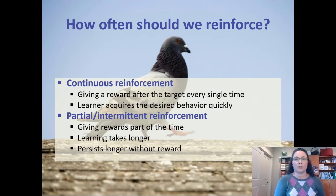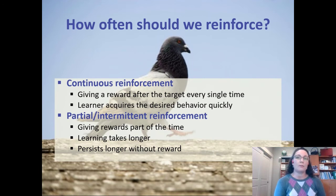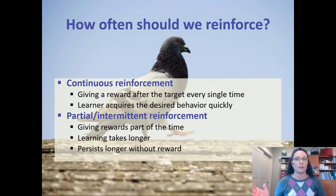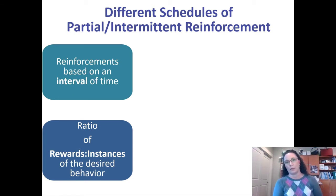Partial reinforcement — also called intermittent reinforcement — means sometimes you reinforce and sometimes you don't. If you start with partial reinforcement from the very beginning when the learner doesn't know what you want, it takes them much longer to figure it out. So start with continuous so they learn quickly. But once you've taught the behavior, switching to partial reinforcement makes the behavior stick around a lot longer. There are schedules based on an interval of time, and those based on a ratio of the number of behaviors to the reward you give.